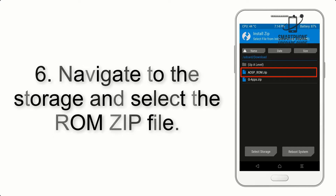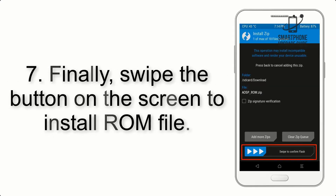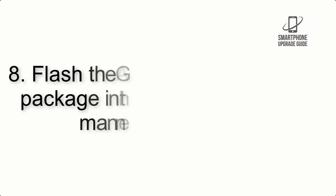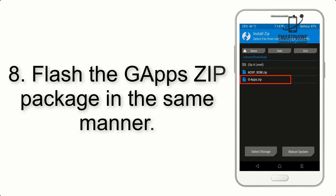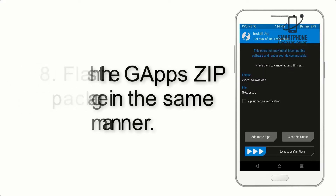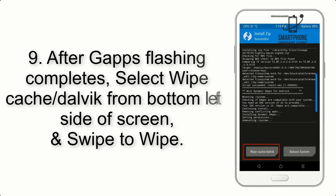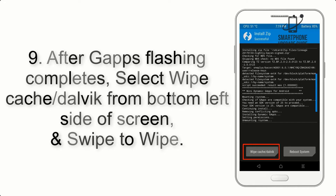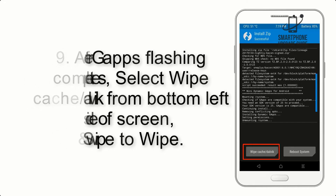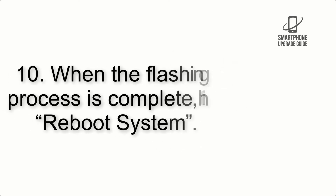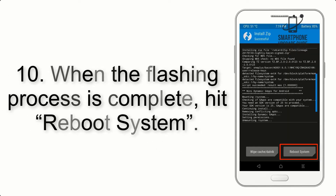Step 6: Navigate to the storage and select the ROM zip file. Step 7: Swipe the button on the screen to install the ROM file. Step 8: Flash the GApps zip package in the same manner. Step 9: After GApps flashing completes, select Wipe Cache and Dalvik from the bottom left side of the screen and swipe to wipe.